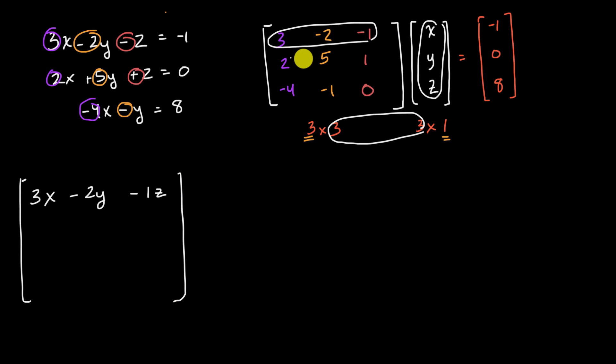And then the next one, I'm going to take all of this business and multiply it by this column. So it's going to be two times X, and this is just a review of multiplying matrices, plus five times Y, plus five Y, plus one times Z, plus one Z.